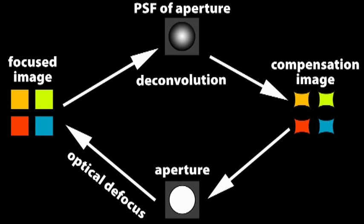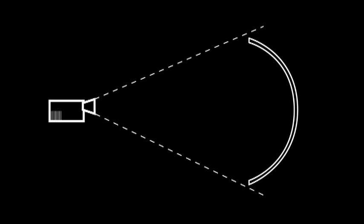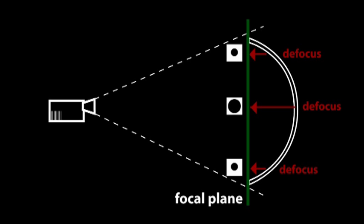The blur function corresponds to a filter kernel whose scale is proportional to the amount of defocus. The different blur levels require multiple deconvolution steps at different kernel scales.